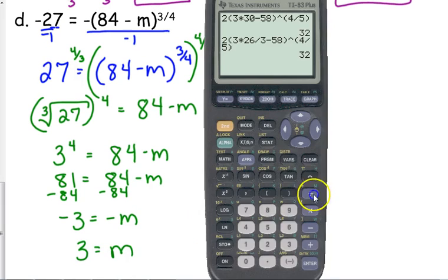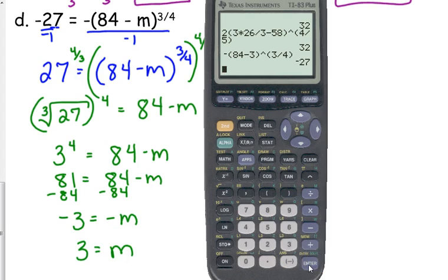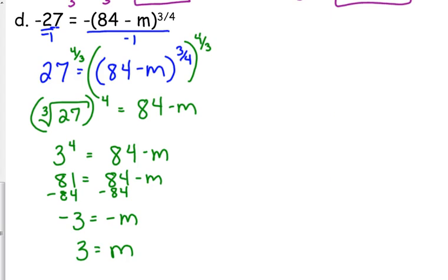So you can check it, type in negative parentheses, 84 minus 3 raised to the, make sure 3 fourths is in parentheses, negative 27.